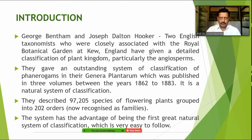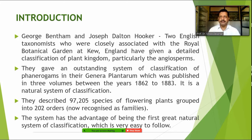Today we know that angiospermic plants alone have about three lakh species. But think about the 19th century — at the end of the 1800s in 1883 — they took enormous effort to classify plants, arranging around one lakh species into a classification system. This was the first natural system accepted throughout the world.